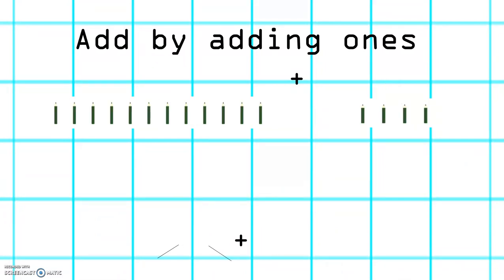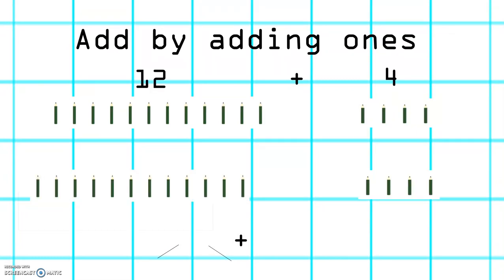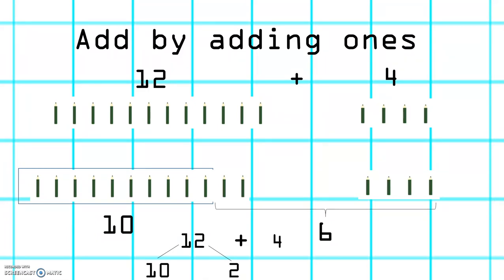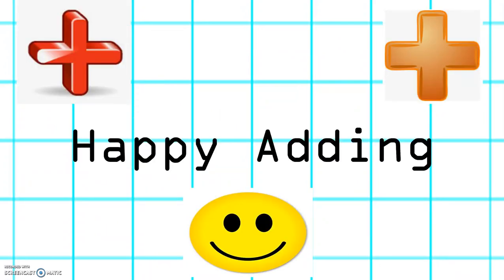Let's try this one. We have 12 plus 4. Again, we're going to make 10, and then we're going to add our ones, which gives us 6. 2 plus 4 equals 6. So if we partition 12, we have 10 and 2. And then we're going to add our ones. 2 plus 4 equals 6. 10 plus 6 equals 16. So 12 plus 4 equals 16. Happy adding!